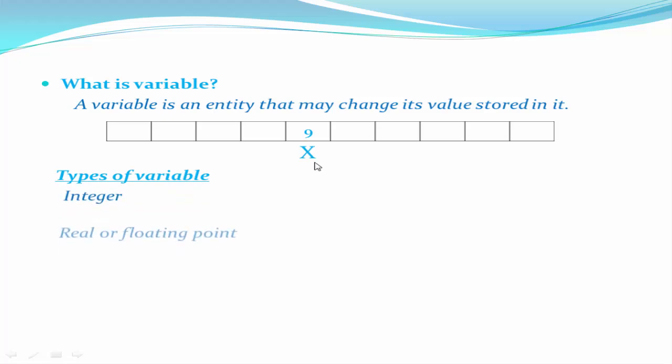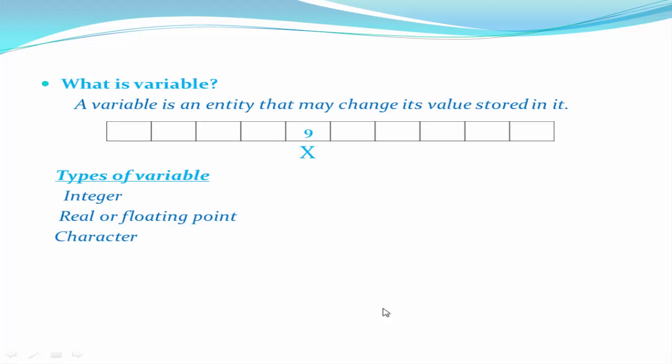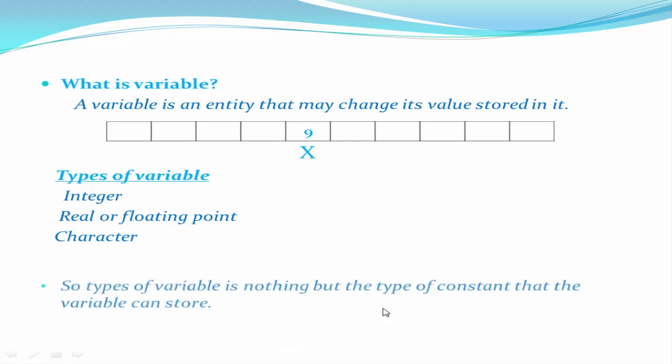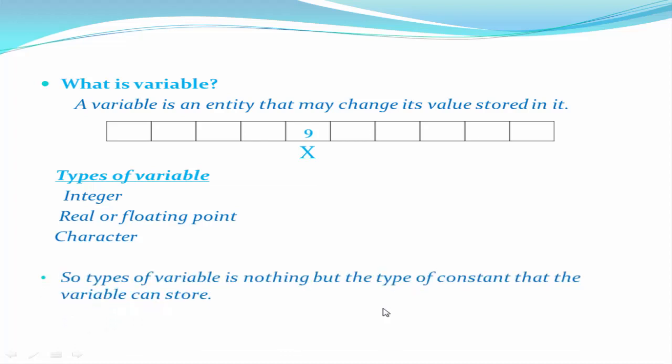Variables are classified into integer, real or floating point, and character. So we can say the type of a variable is nothing but the type of constant that the variable can store.